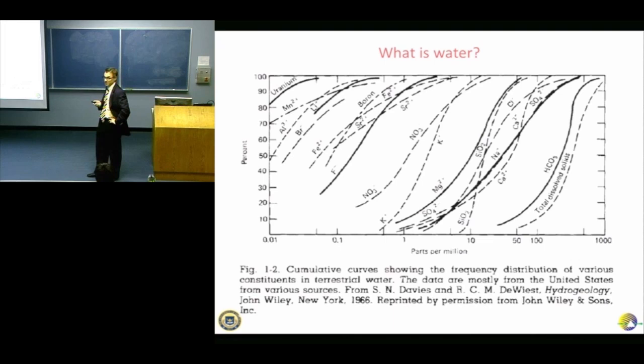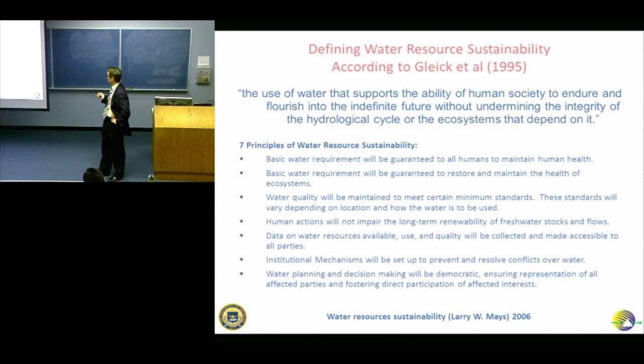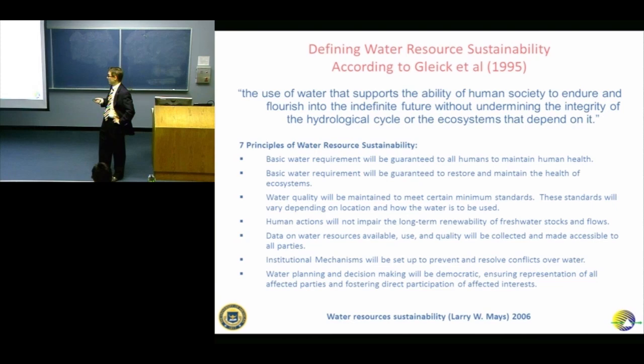Not all of it is useful. Thinking about sustainability, using one fairly reasonable definition: water should support the ability of human society to endure and flourish into the indefinite future — remember, sustainability is about the future — without undermining the integrity of the hydrological cycle or the ecosystems that depend on it. There are regions where more than 40, 60, or 80 percent of the water available is disturbed by humans.